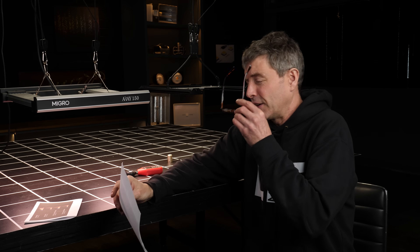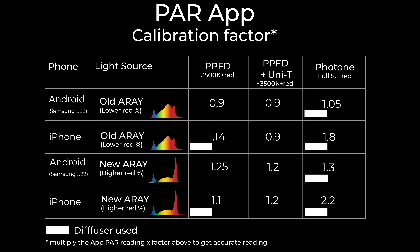Let's look at the chart. The numbers in the boxes are calibration factors. If you are reading your app and get, say, 100 micromoles, you multiply it by these factors to get the actual micromoles. For example, if you get 100 micromoles and you're using an Android with an old array type spectrum and the PPFD app set to the 3500K plus red setting, there's a 0.9 factor — so 100 micromoles is actually 90 micromoles. You can change the calibration factor setting in the PPFD app once, so you'll be getting accurate estimated readings.